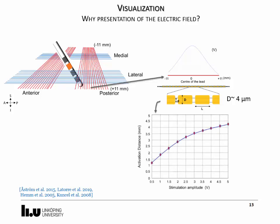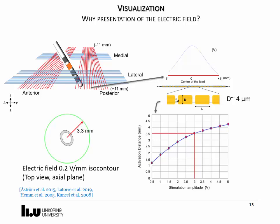the activation distance for fiber diameter between 3 and 3.5 micrometers approximately using a stimulation amplitude with 60 microseconds pulse width and 3 volts is around 3.5 millimeters. Similar distance is achieved with an electric field isolevel of 0.2 volts per millimeter.